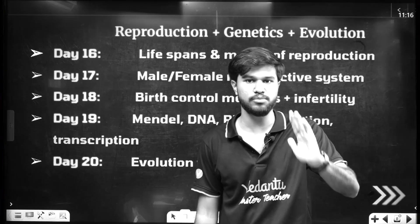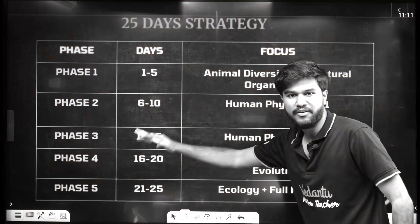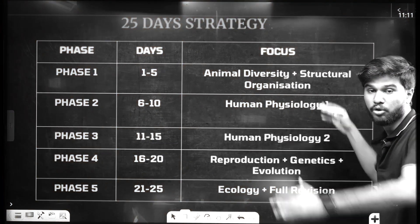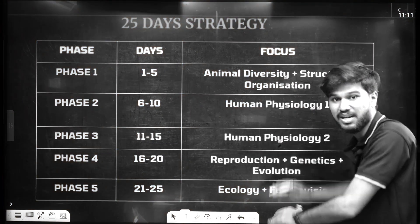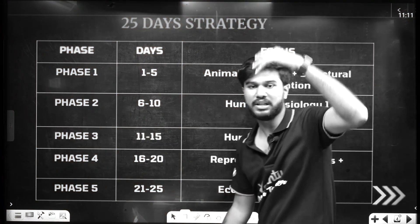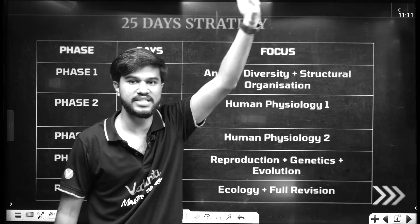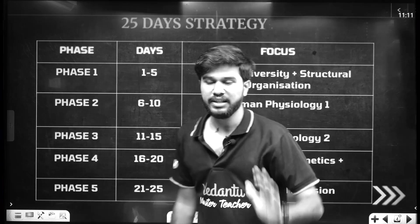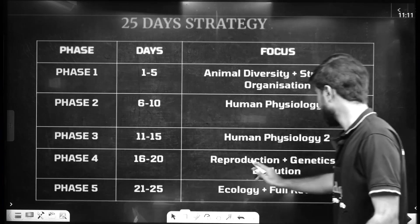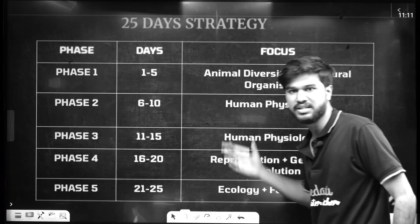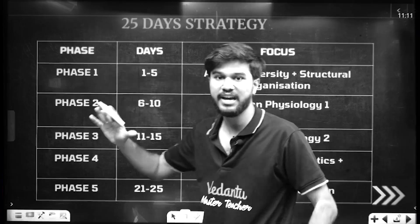Genetics is important in the 3rd phase. In the 3rd phase, we will cover Human Physiology. Then in phase 4, you can cover Reproduction and Genetics. The reproduction and genetics evolution — that is about 16 to 20 days.